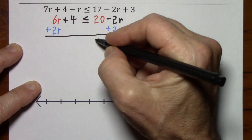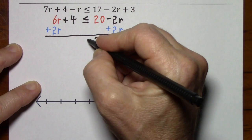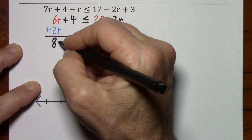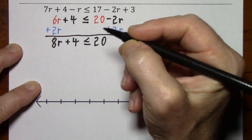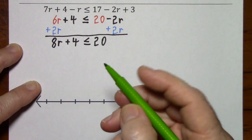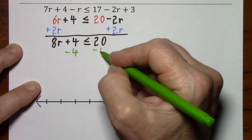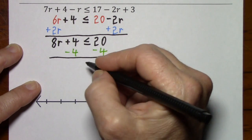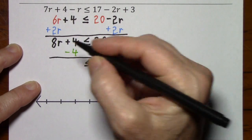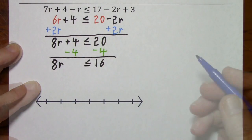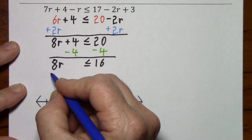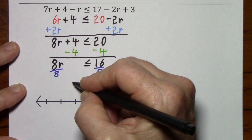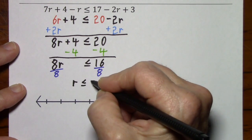That's a zero — we bring down our 20, the inequality sign, and we have 8r plus 4. Let's get rid of this 4 to get r all by itself. This leaves us with 16, the inequality sign, and 8r. So the last step for solving the inequality is to divide each side by 8, and this leaves us with r is less than or equal to 2.